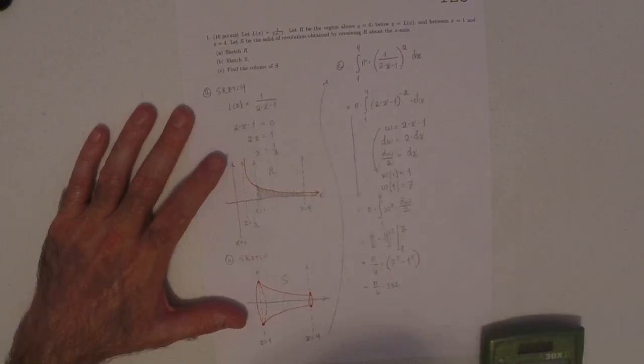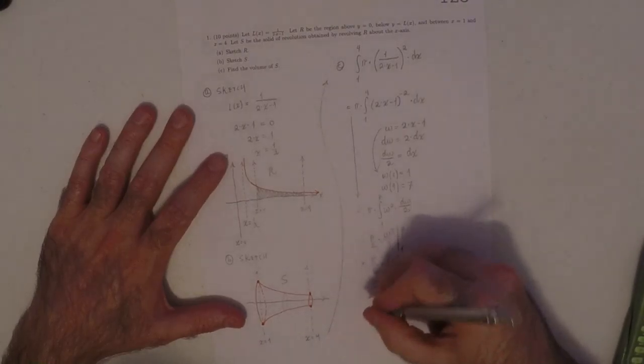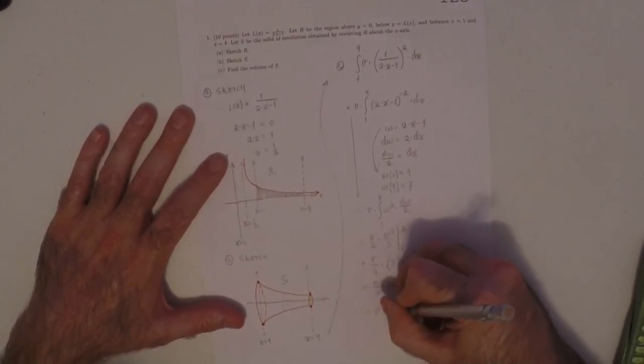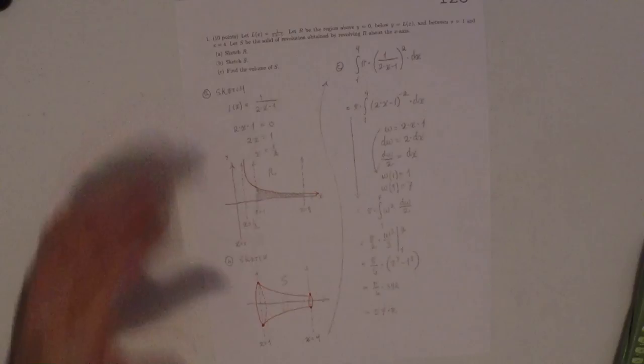Is 342 divisible by 6? Yes. So that'd be 57 pi. That's the answer.